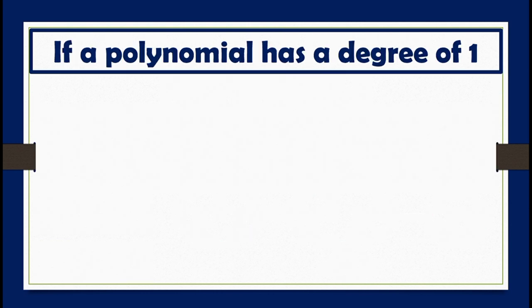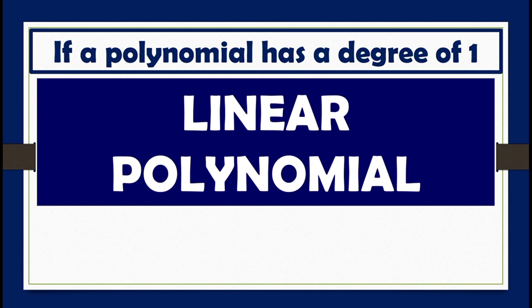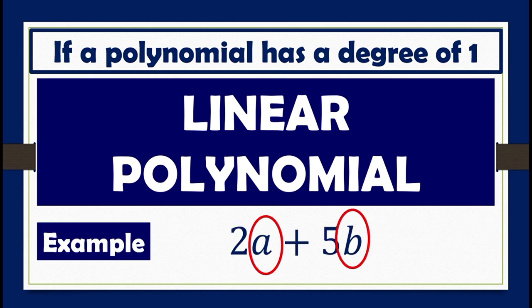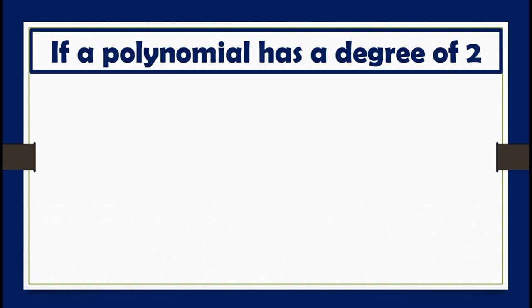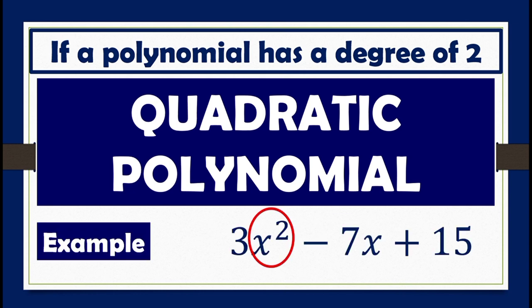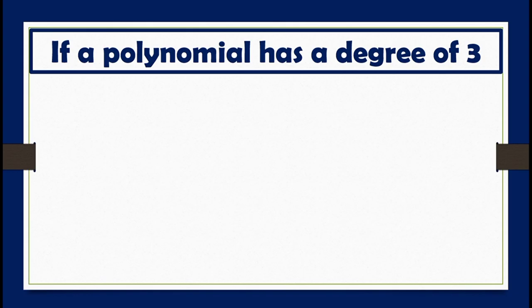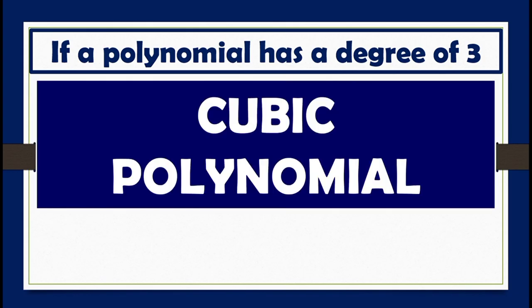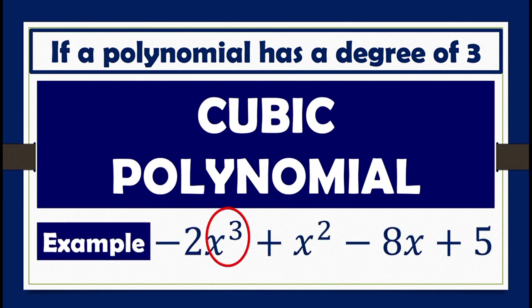If a polynomial has a degree of 1, it is known as a linear polynomial. Example: 2a plus 5b. If a polynomial has a degree of 2, it is known as a quadratic polynomial. Example: 3x squared minus 7x plus 15. If a polynomial has a degree of 3, it is called a cubic polynomial. Example: negative 2x cubed plus x squared minus 8x plus 5.